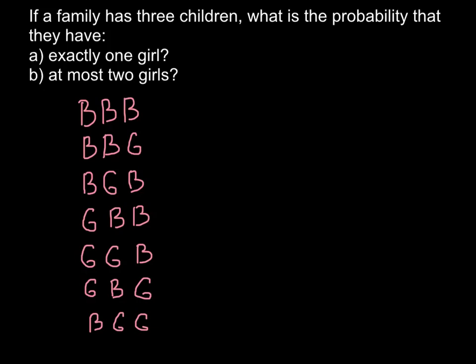And also a family may have three children that are girls. So this would be girl, girl, and girl. So let's count how many variants this family would have. One, two, three, four, five, six, seven, eight. Eight variants.